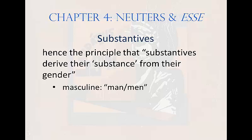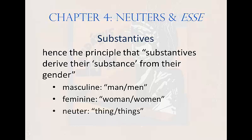Hence the principle that Latin substantives derive their substance from their gender. Because a Latin adjective is masculine, it implies that the unstated noun behind it is man, or men if the adjective is plural. If an adjective is feminine in gender, it implies woman or women. And if it's neuter, thing or things. For an adjective to serve as a substantive, it must have no noun to go with in its sentence — otherwise there's no need to evoke substance from its gender. So if bonus has liber to go with it, it's a good book; there's no need to add man.